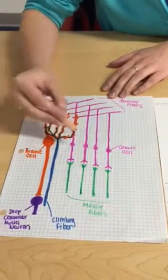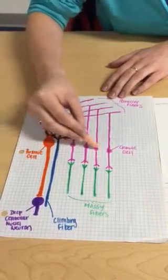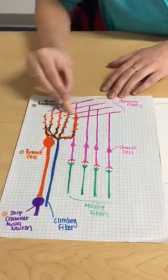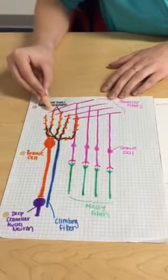Next are the granule cells with the parallel fibers. Think of these as the telephone wires. They run parallel in the molecular layer.